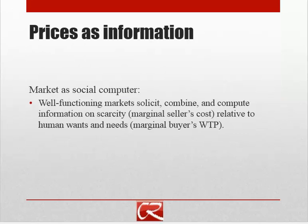What happens when people trade in a market is that their actions reveal their marginal seller cost or marginal buyer cost. Someone's willingness to buy or sell tells through their actions whether their willingness to pay is higher or lower than the market price, and whether their seller cost is higher or lower. The market essentially combines all this information and arrives at an equilibrium price that leads to the efficient outcome — which is really a little bit mysterious and magical when you think about it.